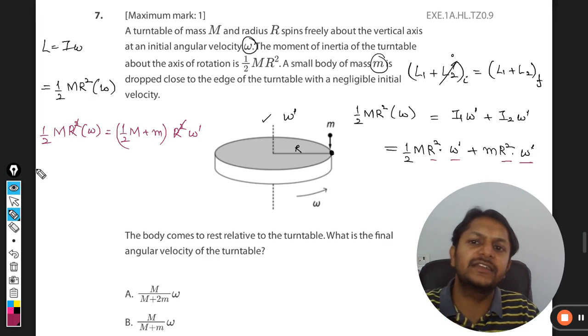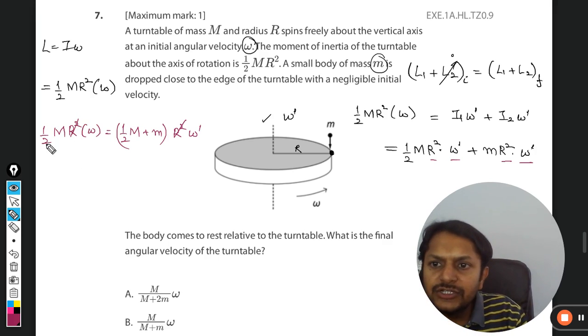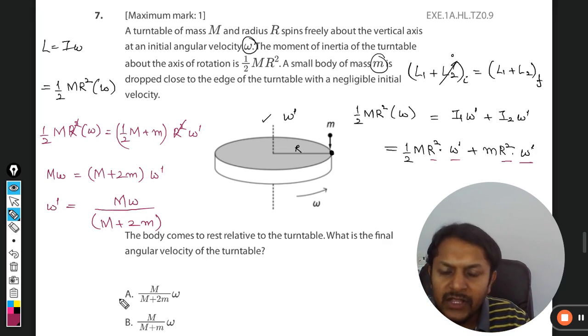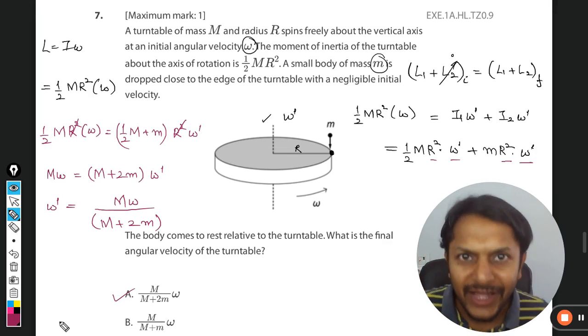R² and R² gets cancelled out, so this 2 can be multiplied to both sides. This will become... omega dash clearly is coming out to be equal to Mω/(M + 2m), which is option A.